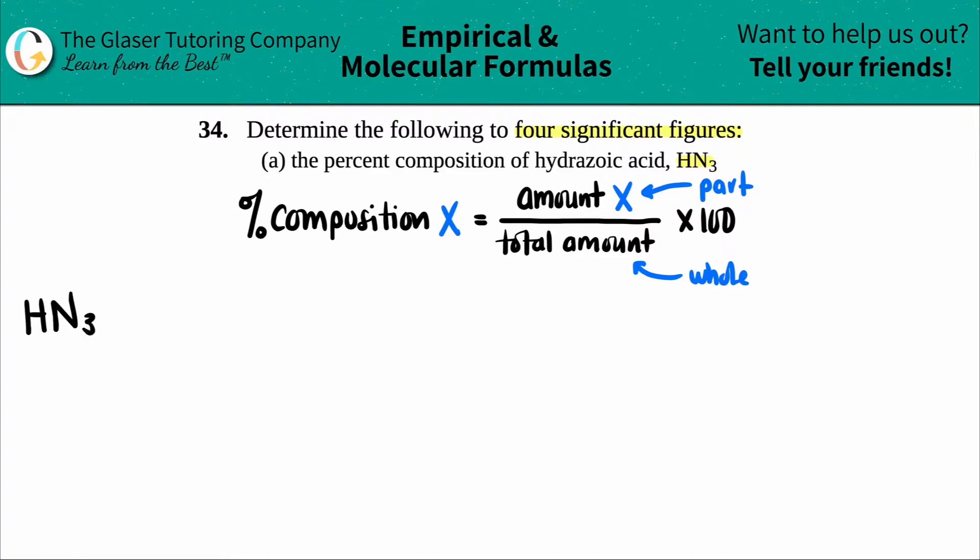So let's go for it. We have HN3. Write out all the elements that you have. In this case, I only see two: I have a hydrogen and I have a nitrogen.